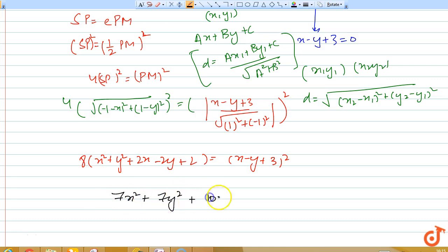Simplifying further: 7x² + 7y² + 2xy + 10x - 10y + 7 = 0.